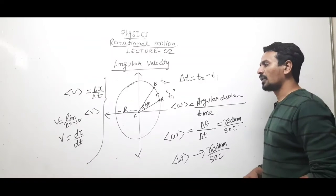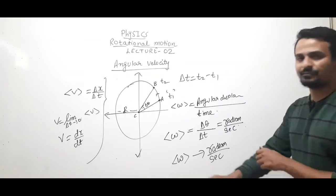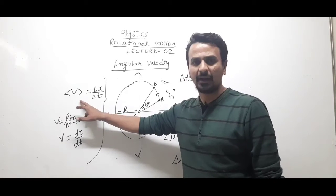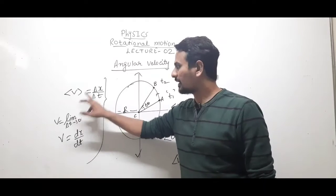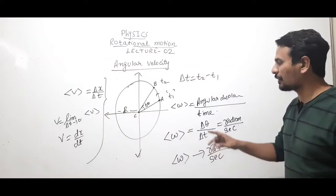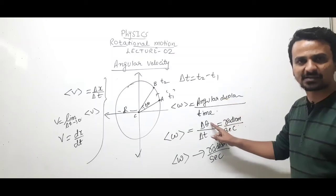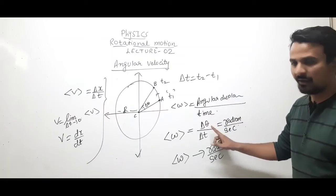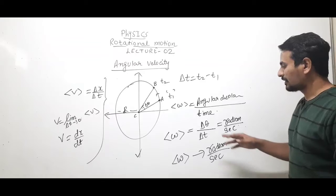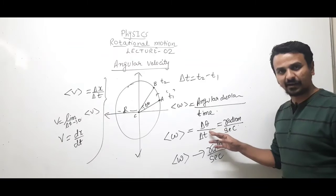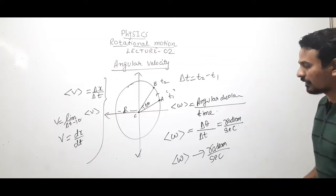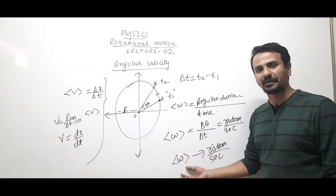Just as linear velocity is linear displacement divided by time, angular velocity is angular displacement divided by time — Δθ/Δt. Since the unit of angular displacement is radian and time is in seconds, the unit of angular velocity is radian per second.